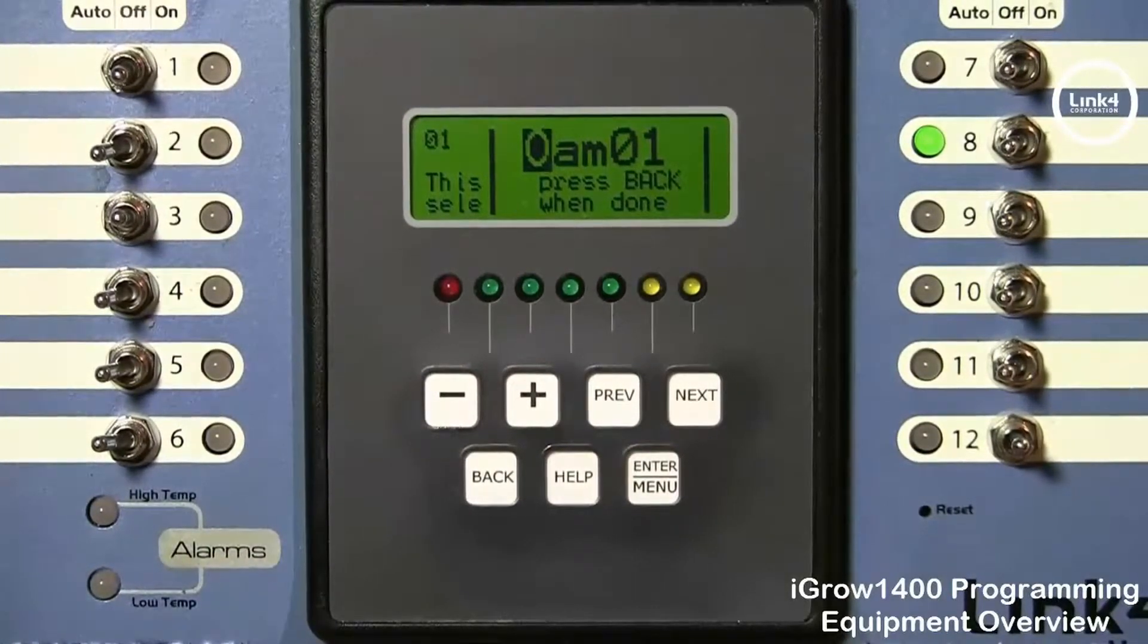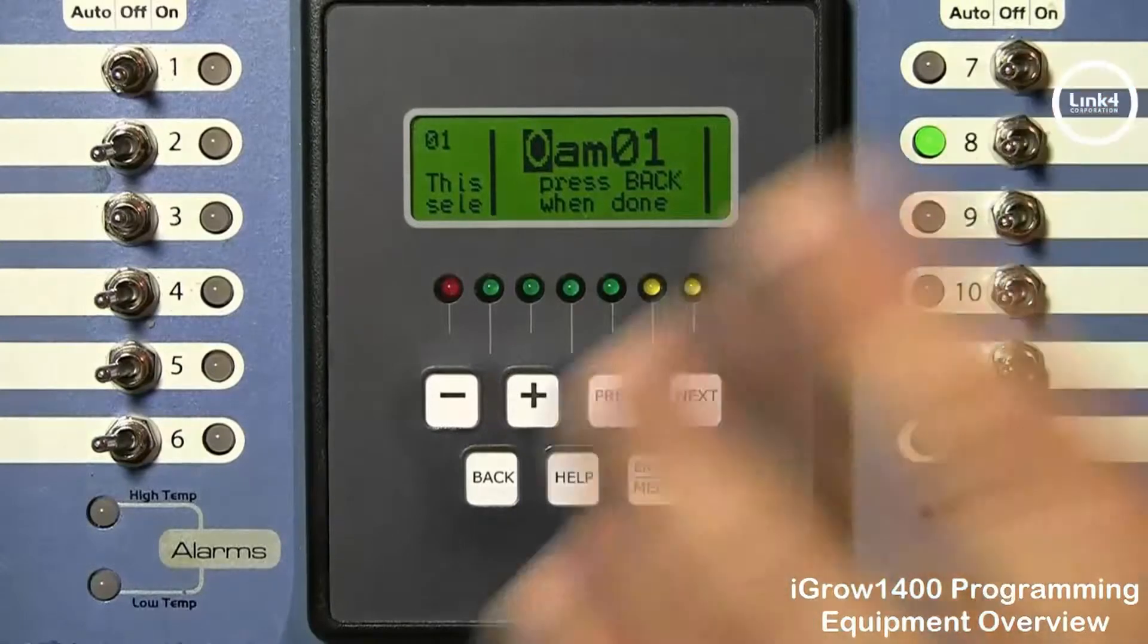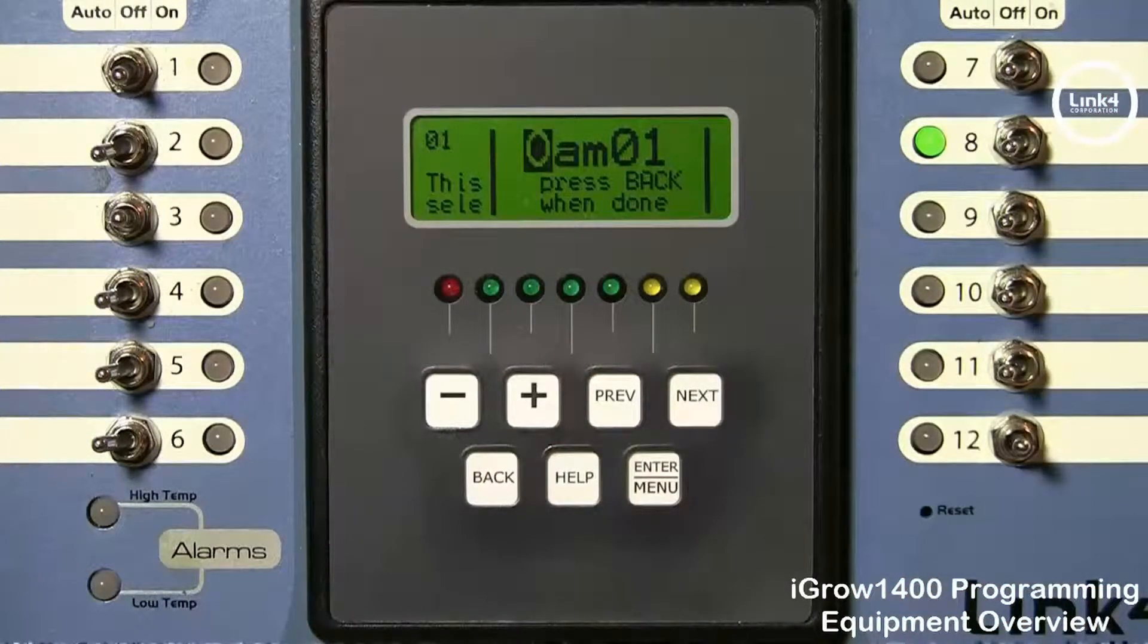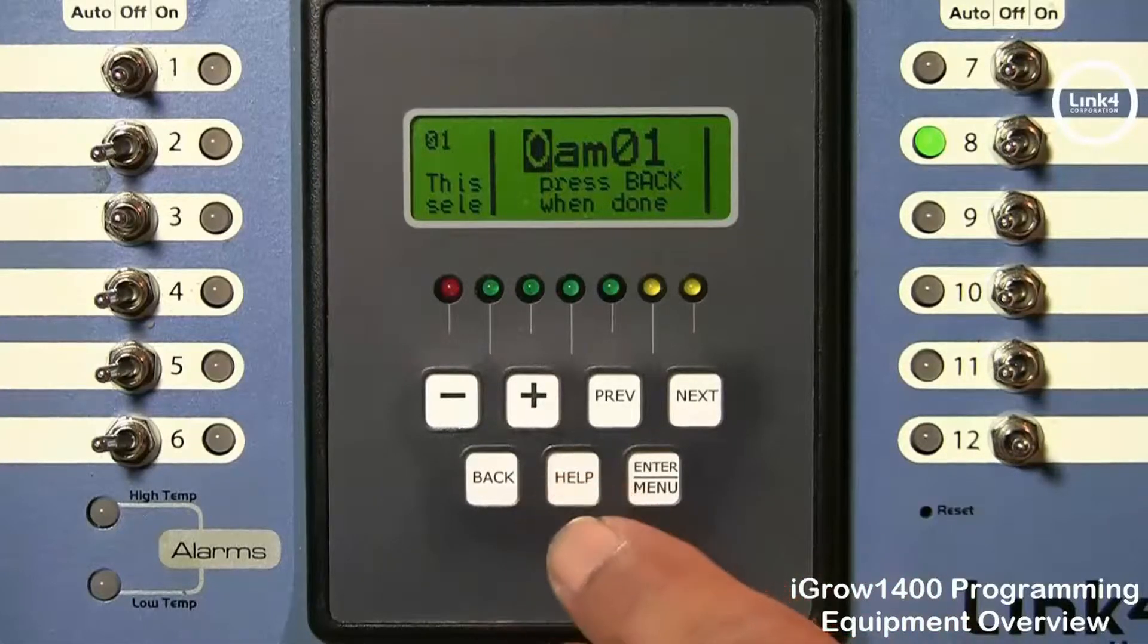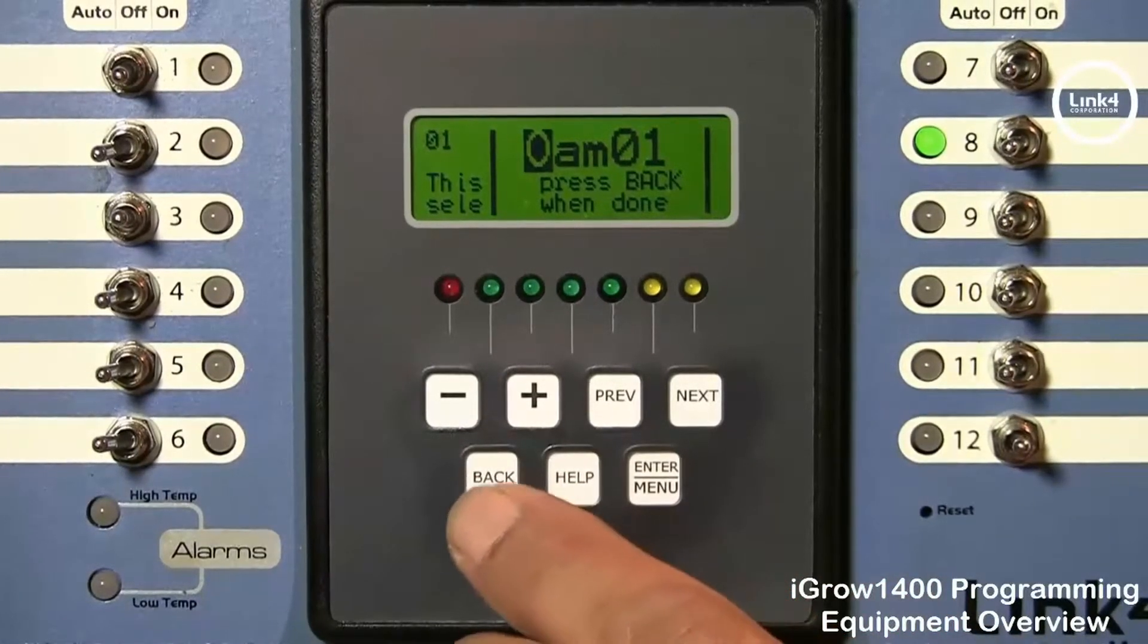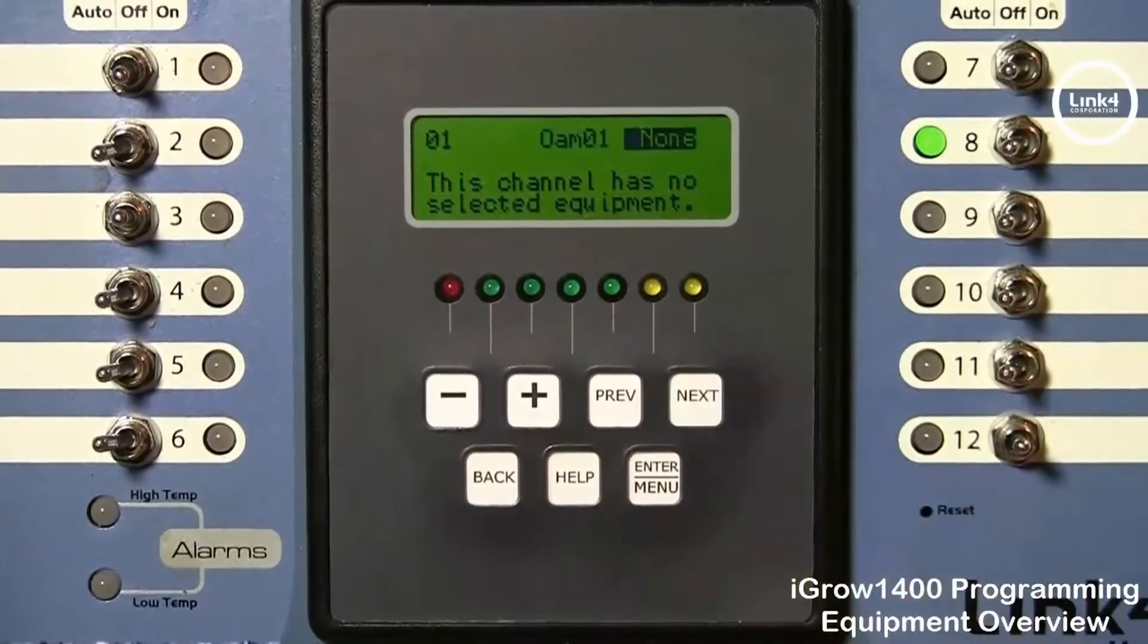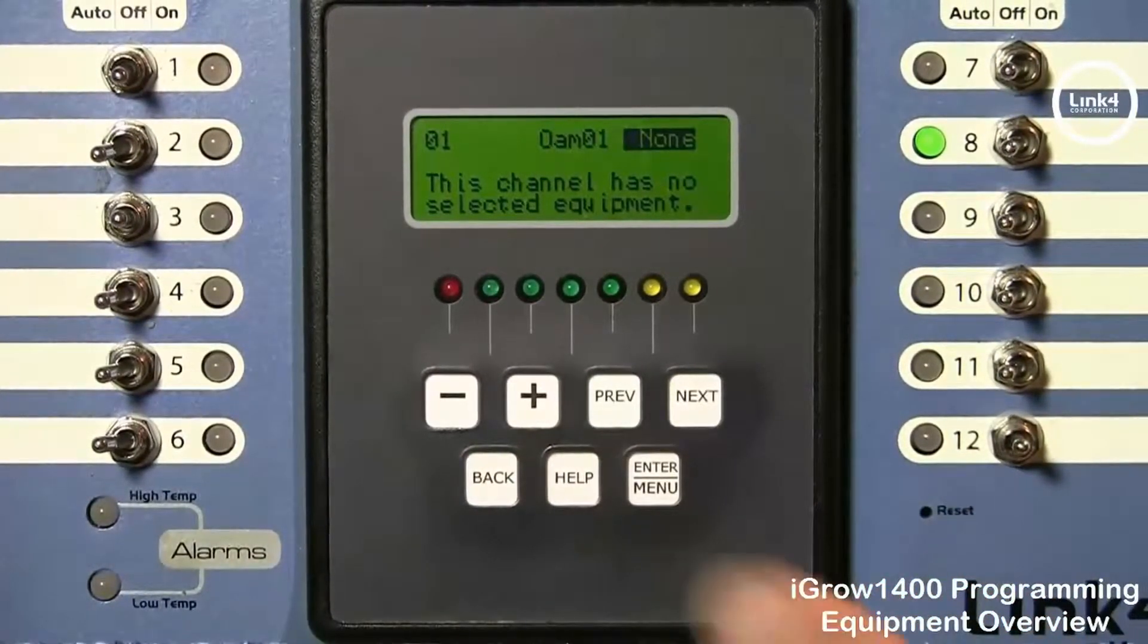You want to go ahead and put characters which relates to the equipment type this particular output is controlling. And once you name your equipment type you hit back and then you'd hit the next button and right now it's displaying none.